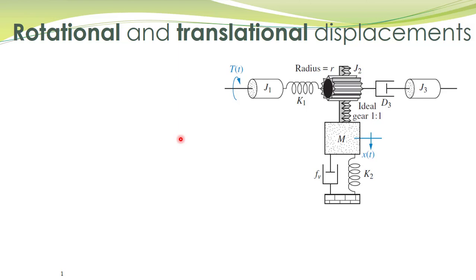We have learned the mathematical modeling of mechanical systems with translational displacements and also with rotational displacements. Here we have a mechanical system which has both rotational and translational displacement, and we want to obtain its mathematical model. The procedure is simple: for rotational displacements we write the torque balance equations, and for translational displacements we write the force balance equations.